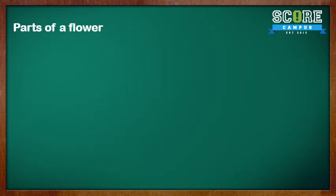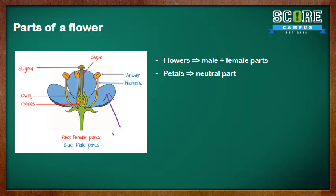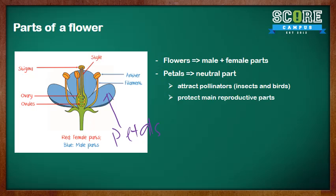Let's look at the parts of a flower. A flower is made up of two main parts: a male part and a female part. The petals are the neutral parts — they are neither male nor female. The petals serve two main functions: to attract pollinators, which are insects and birds, and also to protect the main reproductive parts.